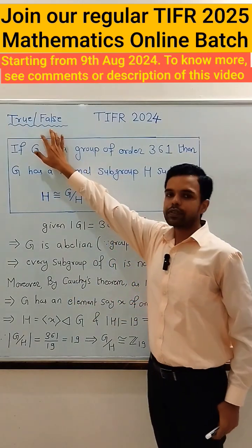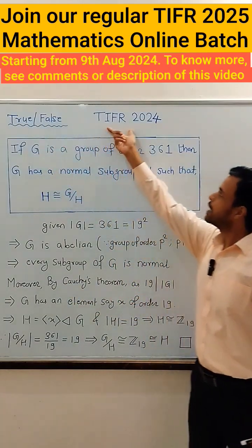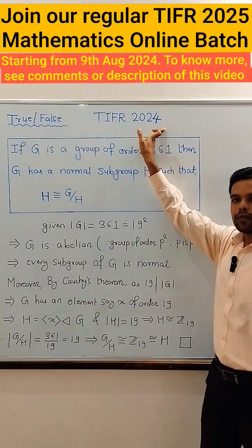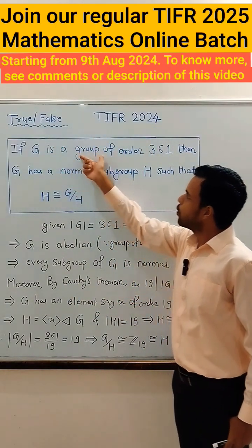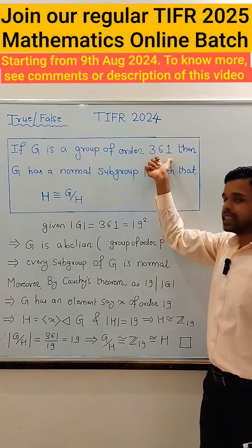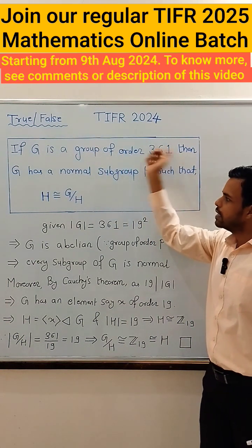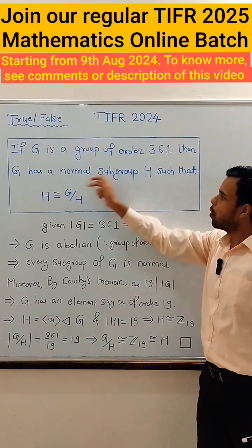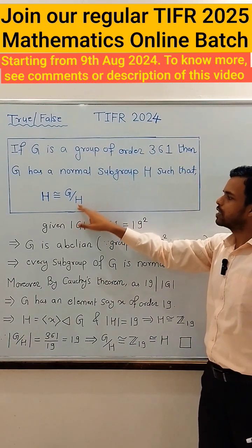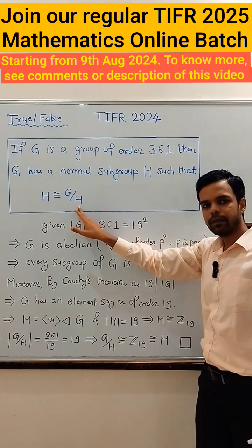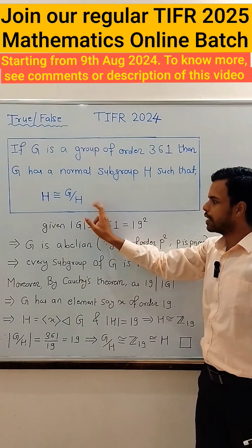Let's look at a true/false question from TIFR 2024. If G is a group of order 361, then G has a normal subgroup H such that H is isomorphic to G by H.